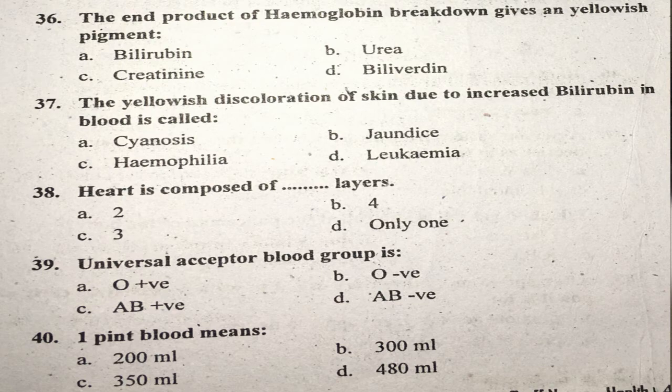Question thirty-eight: The heart is composed of what type of muscle? The correct answer is cardiac muscle. Question thirty-nine: The universal acceptor blood group is AB positive. That is the universal acceptor blood group.